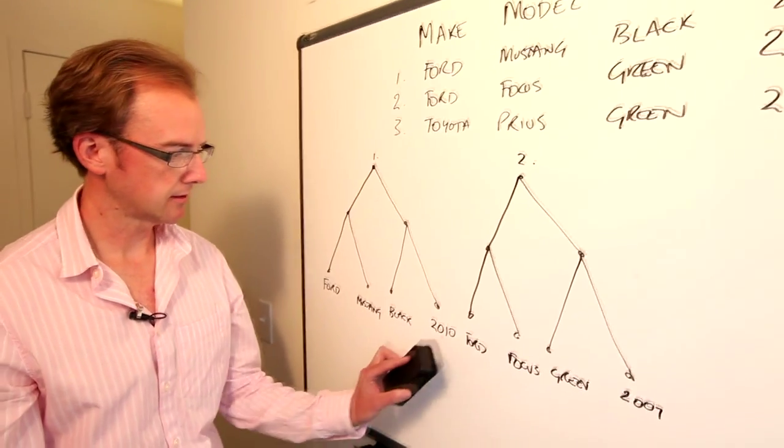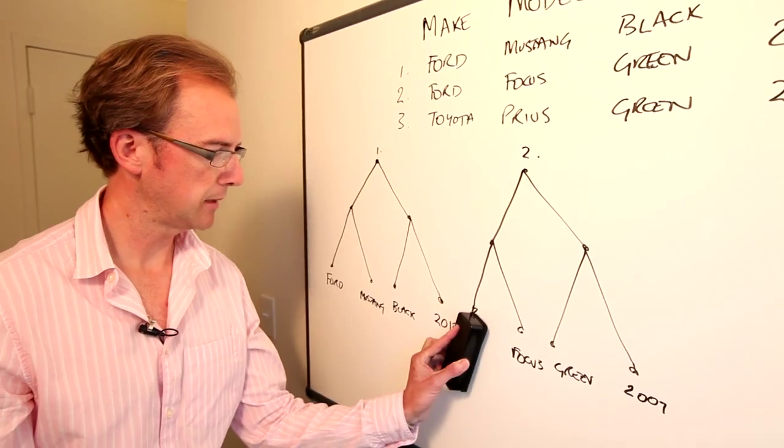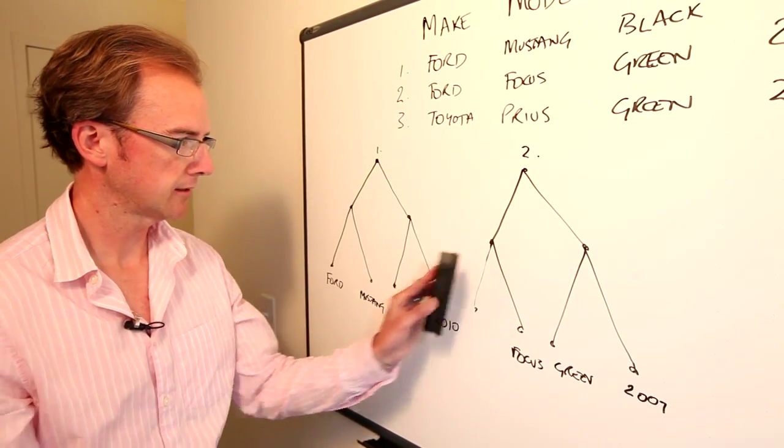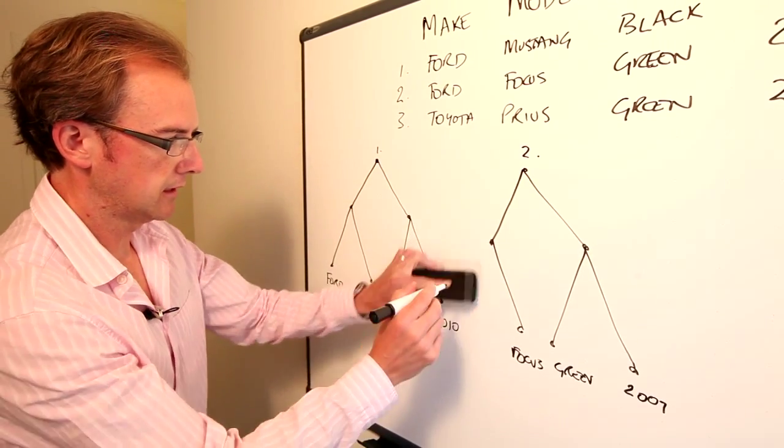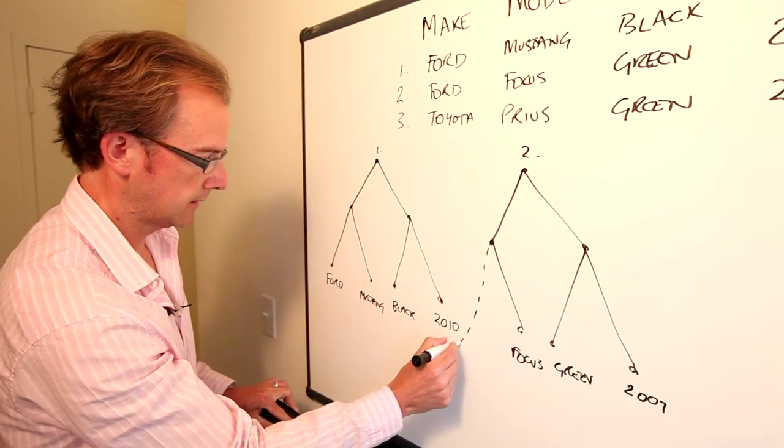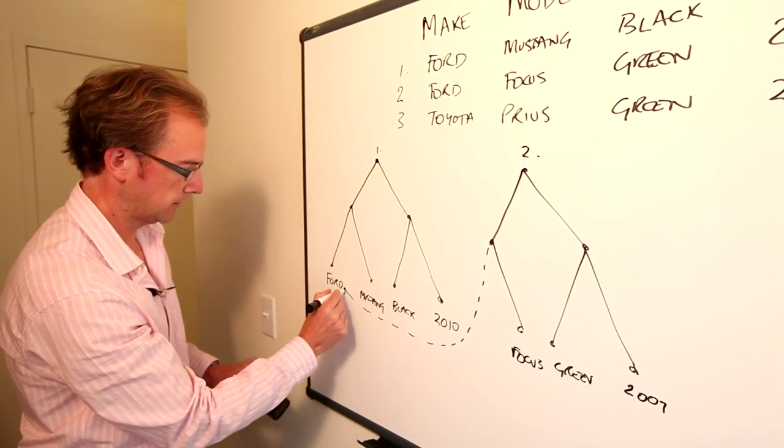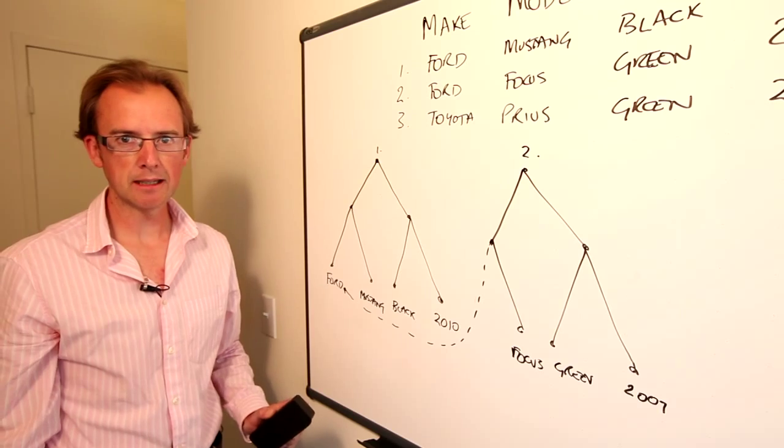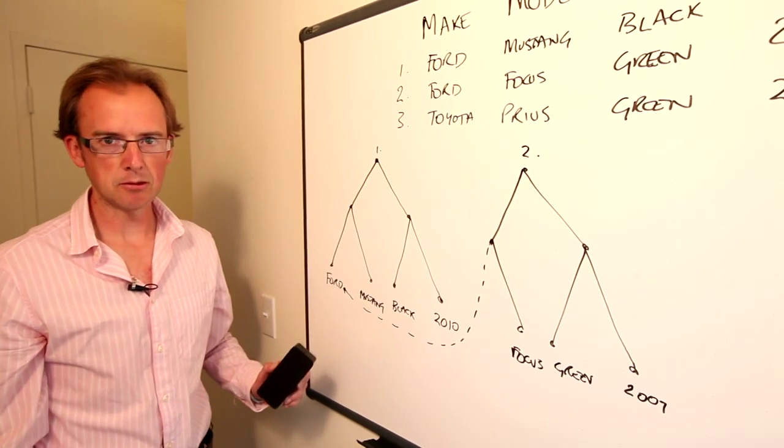So what RainStore does is decide, well, we're not going to store this information about this leaf twice. What we're simply going to do is store a pointer to the value in the first record. So that's our first level of deduplication, column level deduplication.